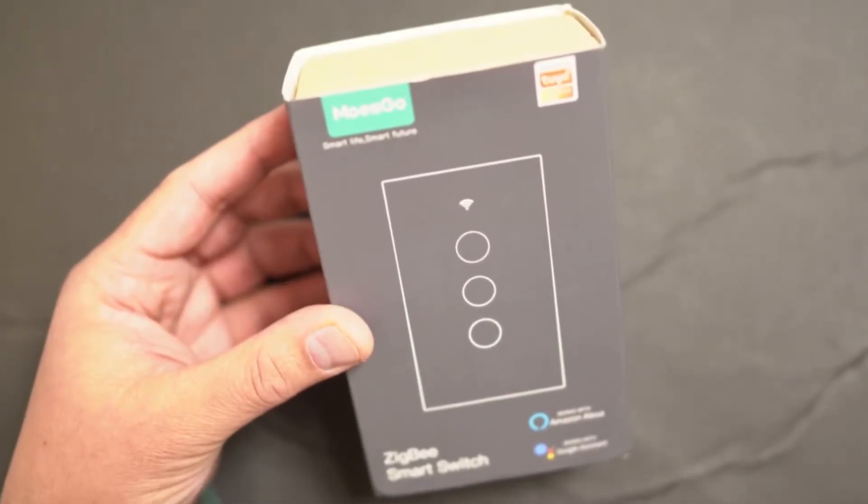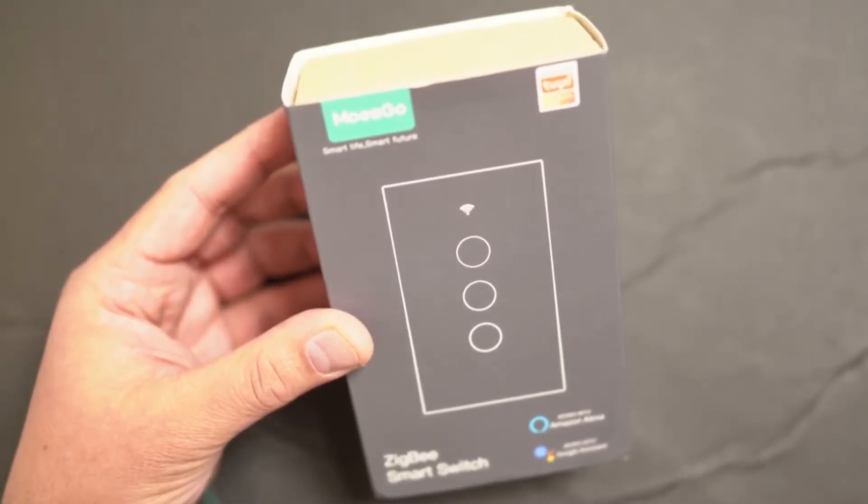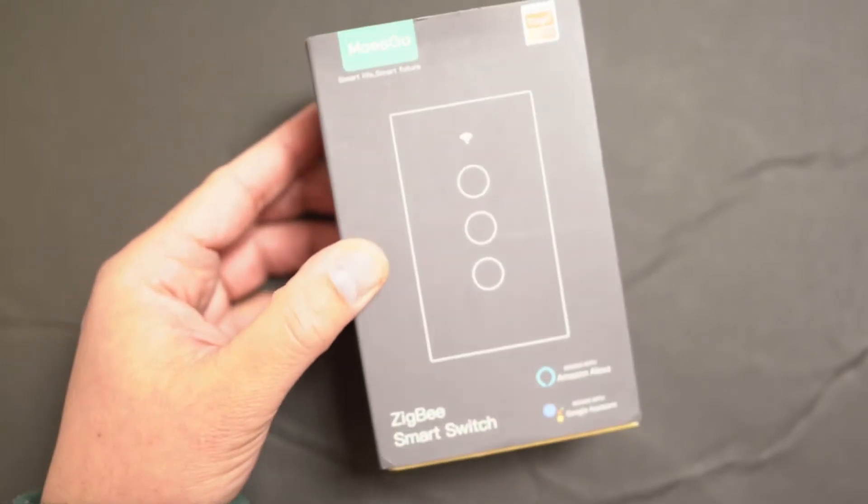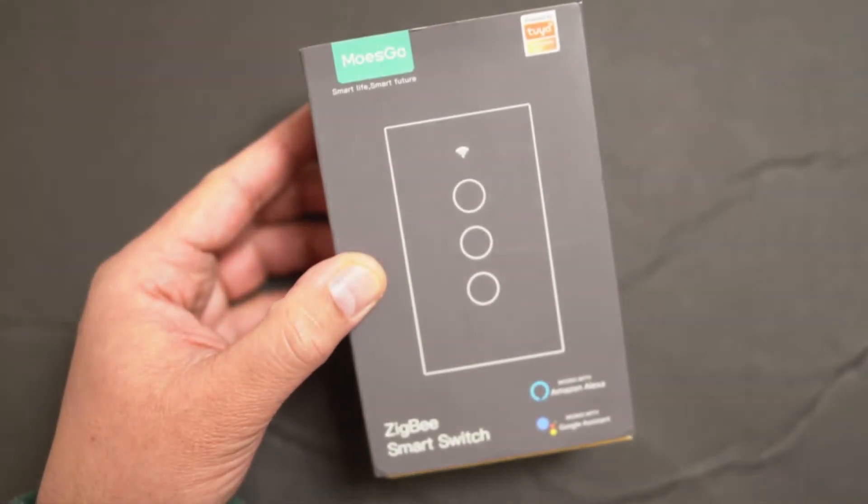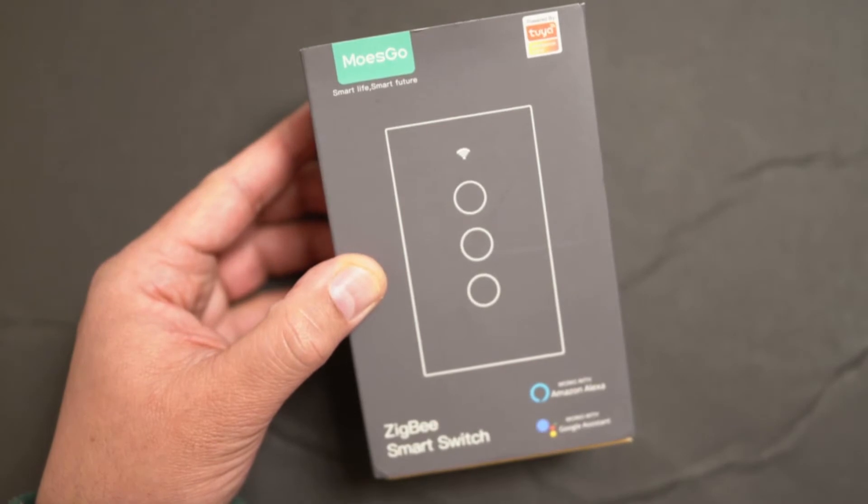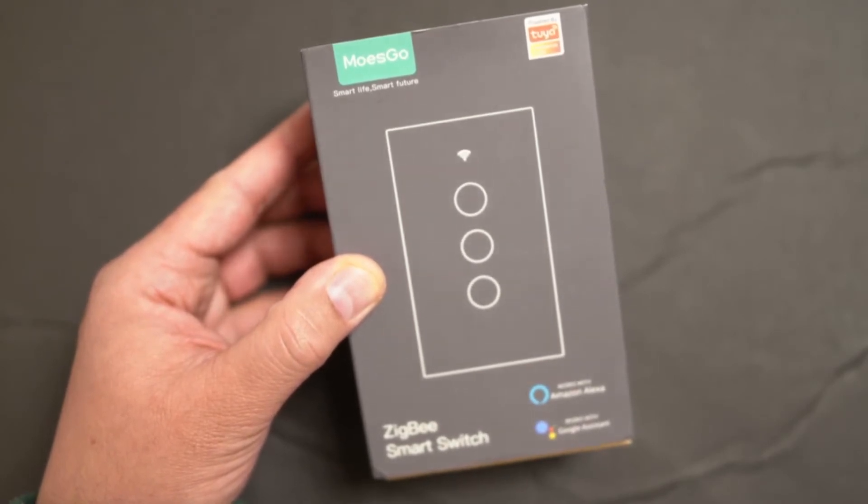I have an old 1950s home and as usual, the neutral wires are not available. So the idea is to find a switch which actually works with it. There are only two switches which I found that actually work.